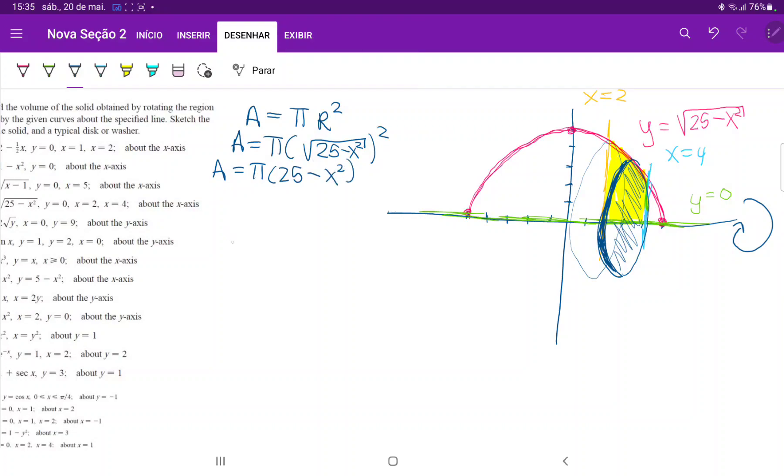All right, we are ready to set up our integral. So we're integrating our boundaries from 2 to 4. And I'm going to put the pi outside since it's just a constant. And we have the integral of 25 minus x squared times dx.